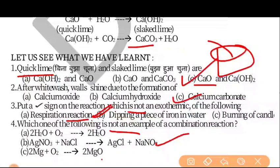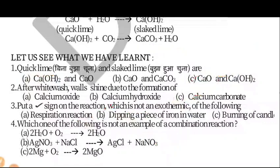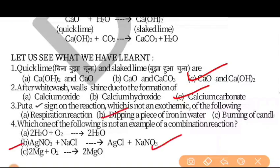So to summarize: Question 1 answer is C, Question 2 answer is C, Question 3 (which is not exothermic) answer is B, and Question 4 answer is B. These are simple questions — make sure you practice them, as objective questions like these will definitely appear in your 1-mark section. If you haven't subscribed to the channel yet, please do subscribe, hit the like button, and press the bell icon so you never miss any updates on your examinations and important chapter or worksheet videos.